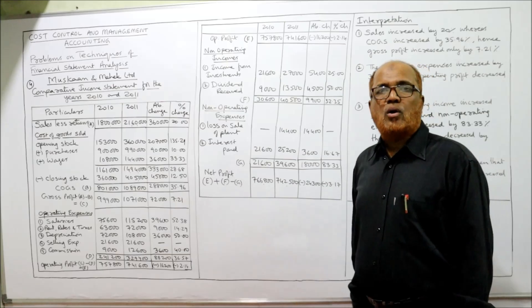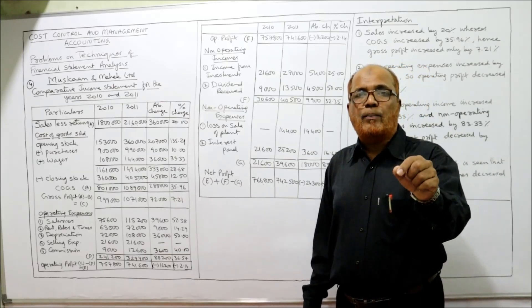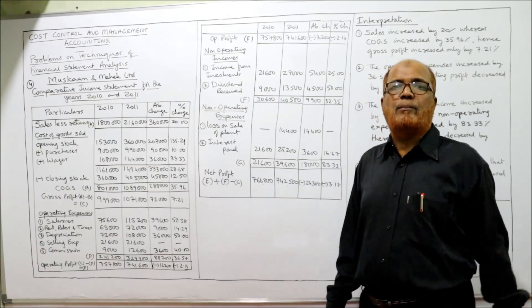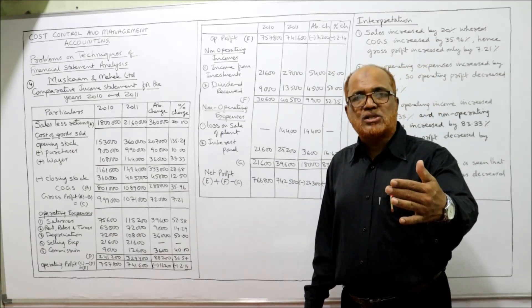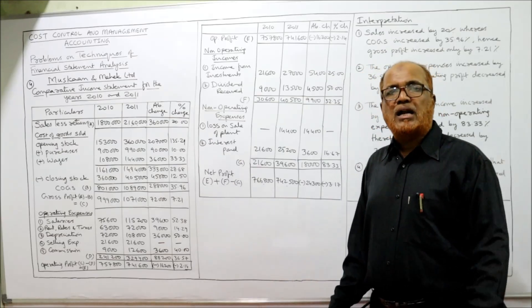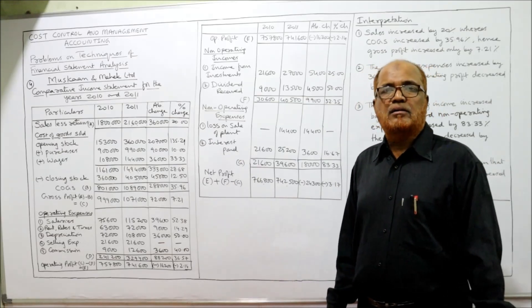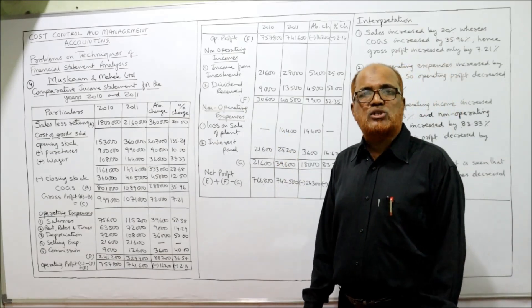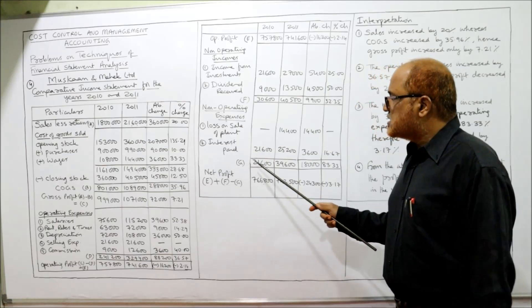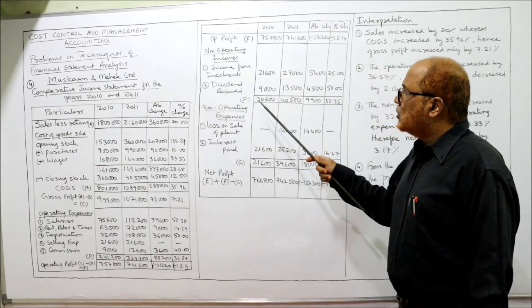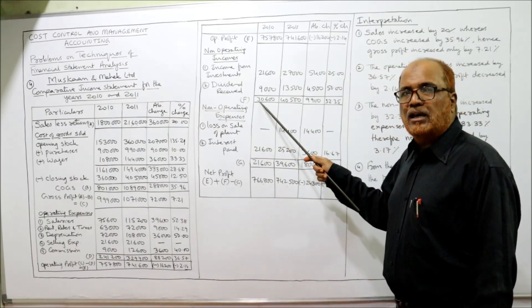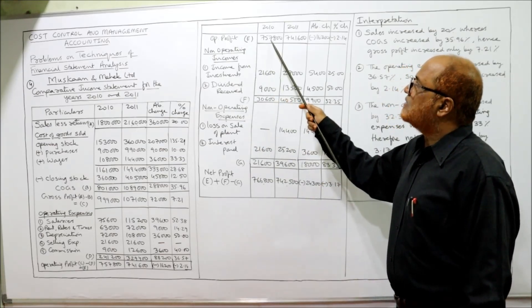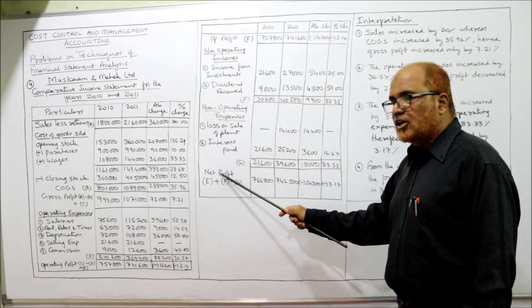This is an important new point: non-operating expenses consist of loss on sale of plant and interest paid, while non-operating income consists of dividend received and interest on investment. F is non-operating income, G is non-operating expenses. Net profit is calculated as operating profit (E) plus non-operating income (F) minus non-operating expenses (G).